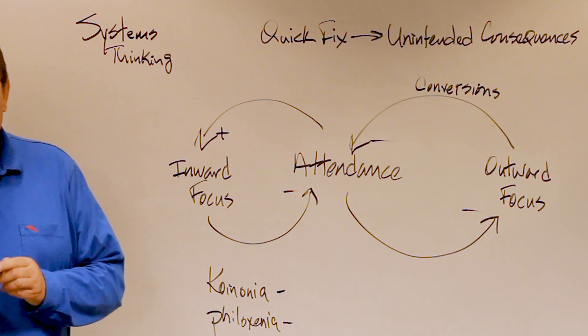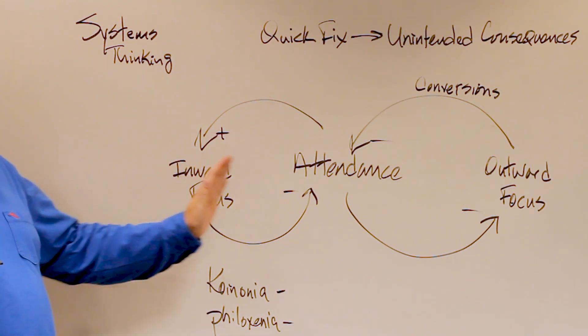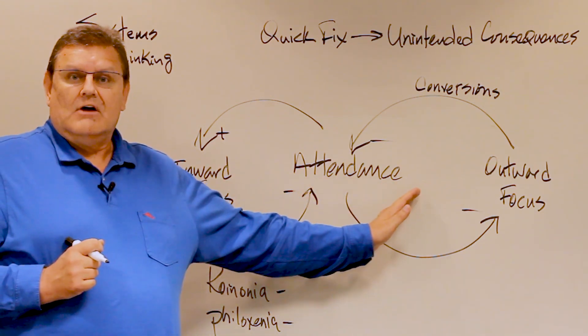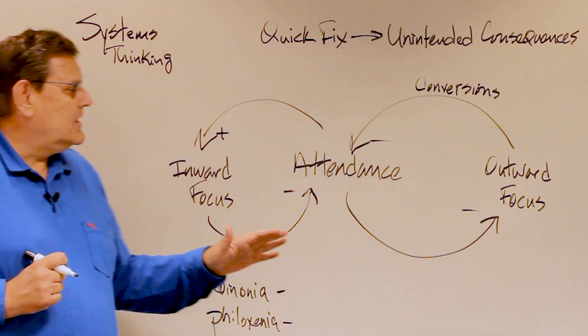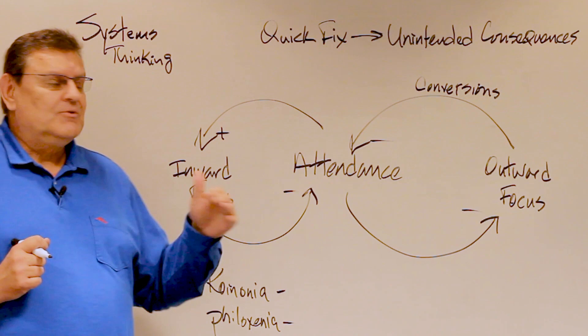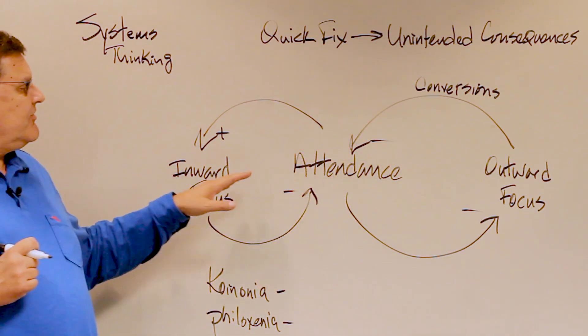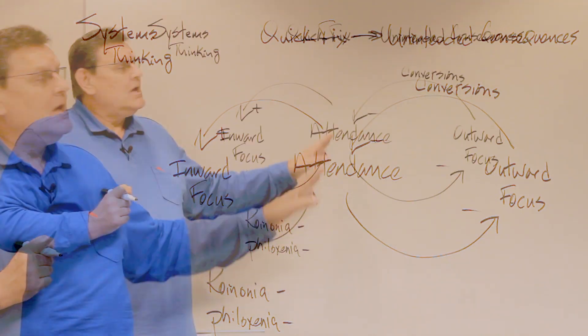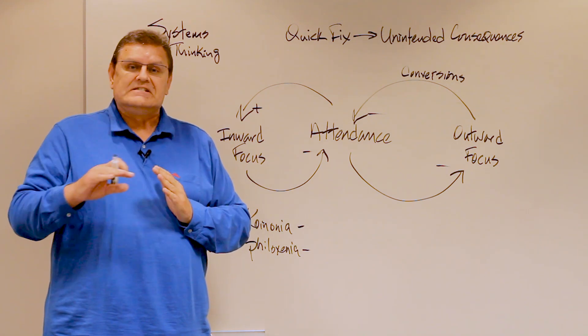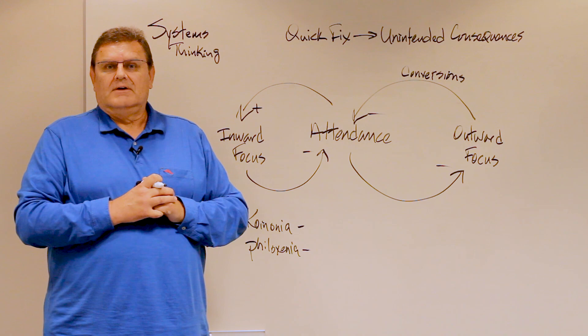And here's the issue. By paying attention to the quick fix of focusing on the inward congregation and ignoring the outward focus of those outside the church who don't know Christ, we're not only not accomplishing our mission, but we're minimizing our opportunity to continue to bring people into the kingdom and into the church. And so what we think is going to keep our attendance up actually declines our attendance more, because the quick fix has the unintended consequence of actually decreasing our outreach and our evangelism.